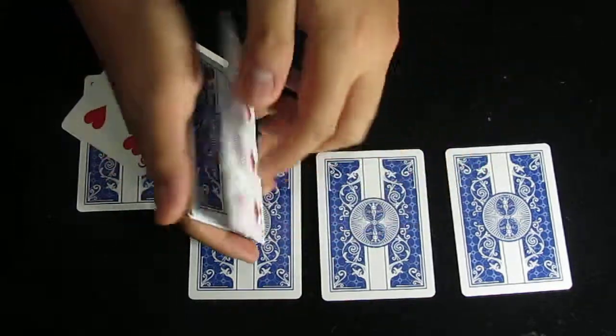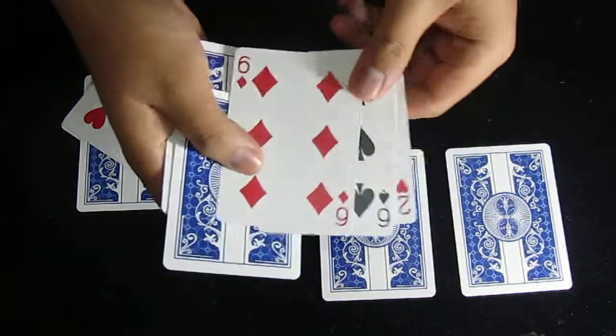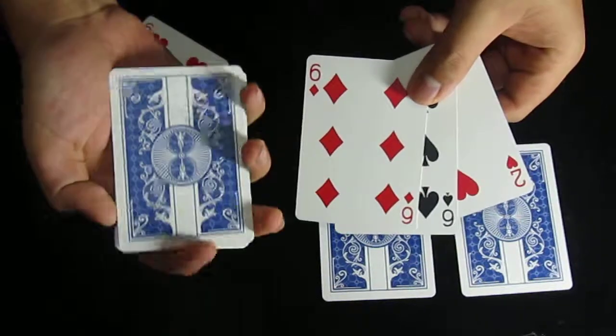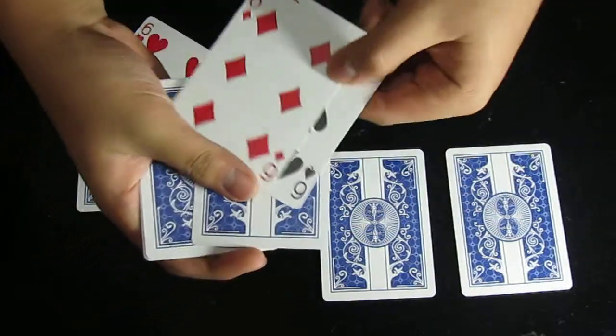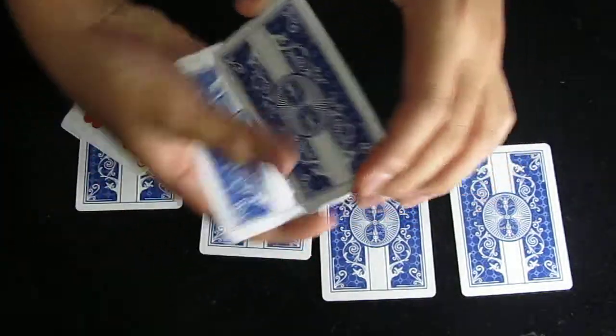Three more indifferent cards. And this time I've got the ace of clubs. I'll place that in between the cards. One, two, three, and four.